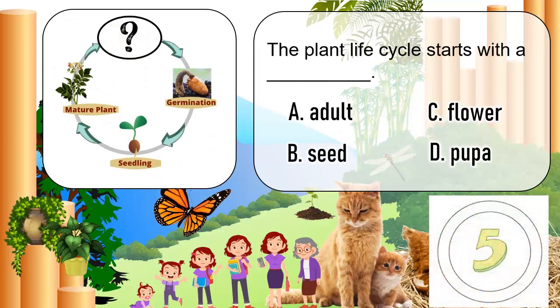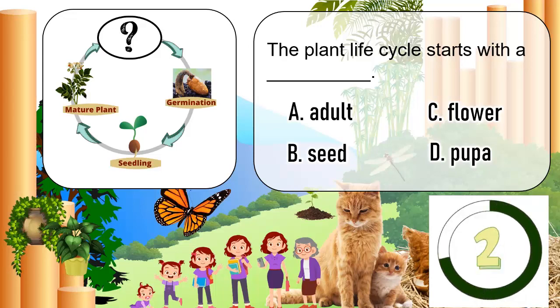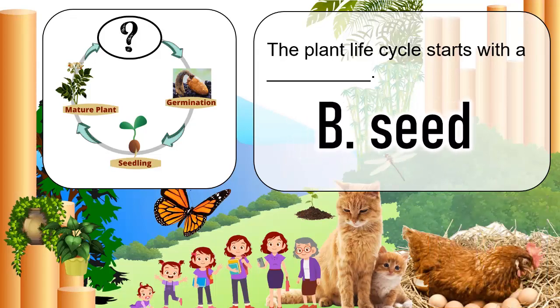The plant life cycle starts with a blank. A. Adult, B. Seed, C. Flower, D. Pupa. The correct answer is B. Seed.